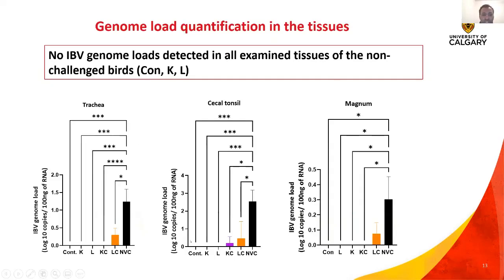For IBV genome load in tissues, no IBV genome load was detected in any examined tissue of the non-challenged birds. We observed significant differences in three tissues: the trachea, cecal tonsils, and the magnum. In the trachea and cecal tonsils, the IBV genome load in the NVC group was significantly higher compared to the other groups. For the magnum, the IBV genome load in the NVC group was significantly higher compared to all other groups except the LC group.